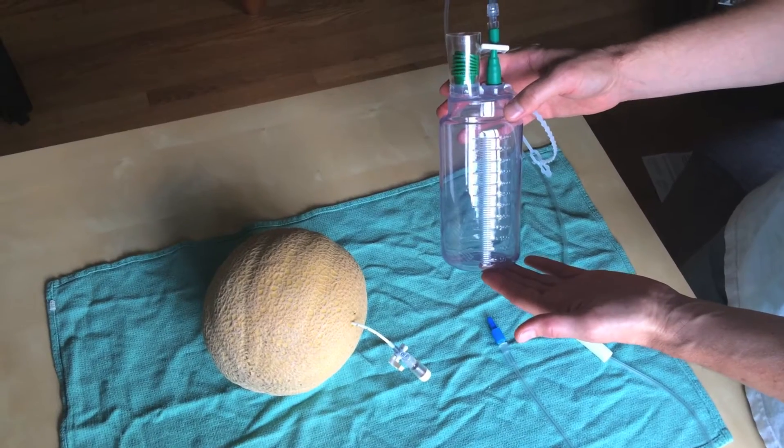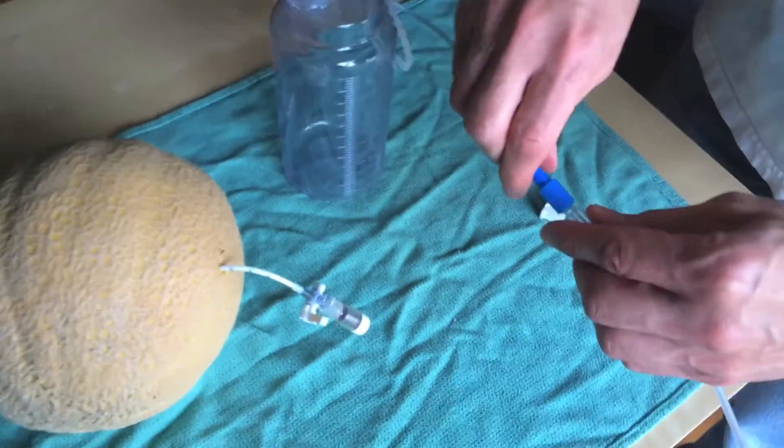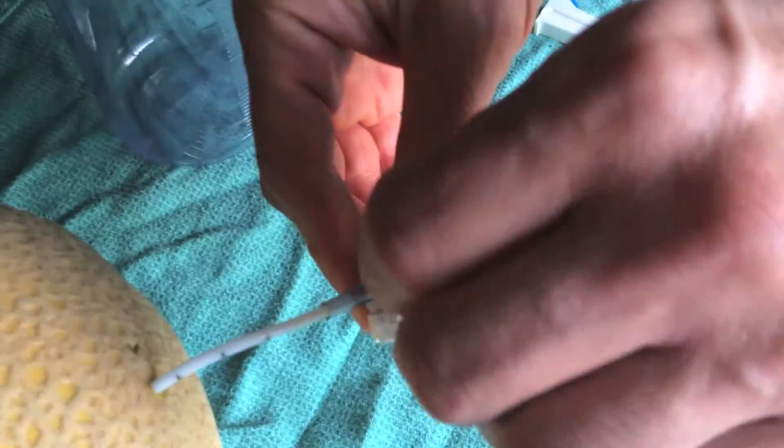The first option for drainage is to use a plastic vacuum bottle. Take the tubing from the vacuum bottle and attach it via a luer lock at the stopcock.